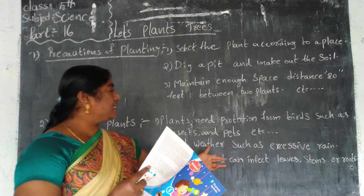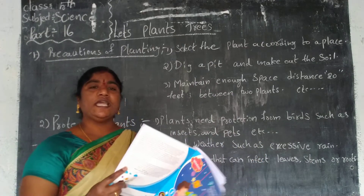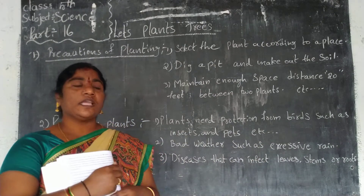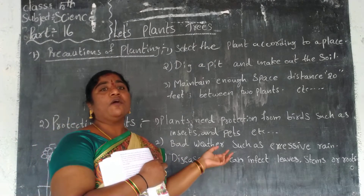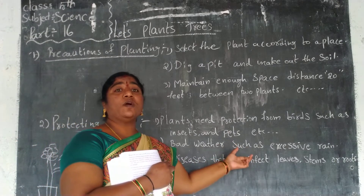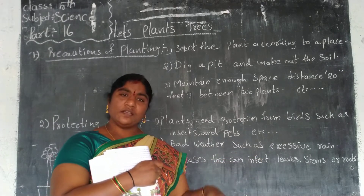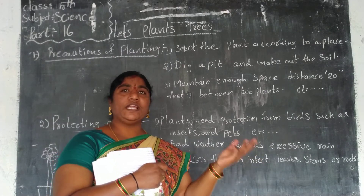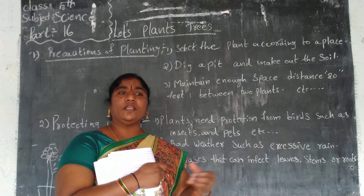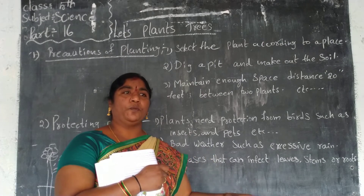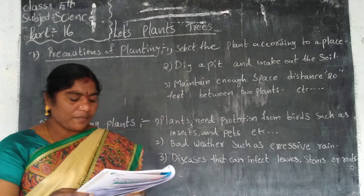Diseases can infect leaves, stems, or roots. Some diseases can infect the plant's leaves, stems, and roots, and then the plant may die. When diseases occur, the plant will not grow properly.